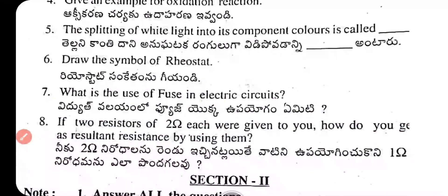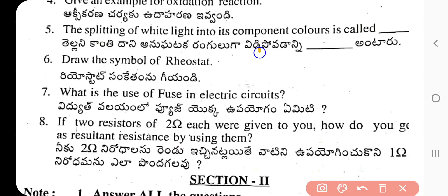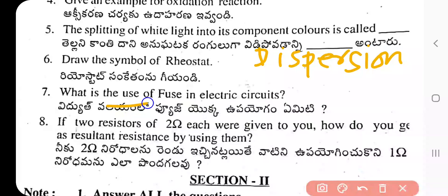Question 5: The splitting of white light into its component colors is called dispersion. Question 6: Draw the symbol of a rheostat.